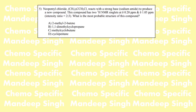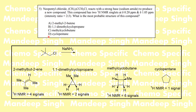Here we have an interesting problem: neopentyl chloride reacts with sodium to produce a new compound, and we are told the NMR shows two signals. We can draw all possible structures to determine how many NMR signals each would give. For 2-methylbutene we are going to see four signals — one for the vinyl hydrogen, one for the adjacent methyl, and one each for the two other methyl groups. Since those two methyl groups are in different environments — one cis and one trans to the hydrogen — they give two separate signals. For 1,1-dimethylcyclopropane we are going to see only two signals, so the correct option is number two.